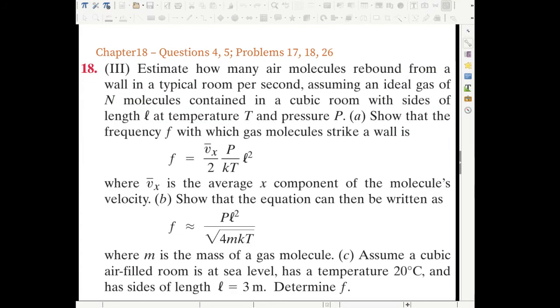So problem 18. We are asked to estimate how many air molecules rebound from a wall in a typical room per second, assuming an ideal gas of N molecules contained in a cubic room with size of length L, temperature T, and pressure P. And then we are asked to show that some formula holds. And then again show that this equation can be written as some approximation. Then we are required to put in some numbers and get a numerical answer for a particular case.